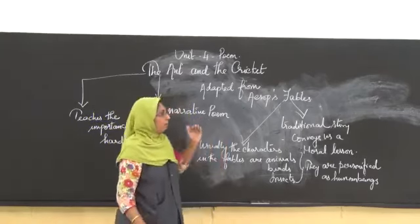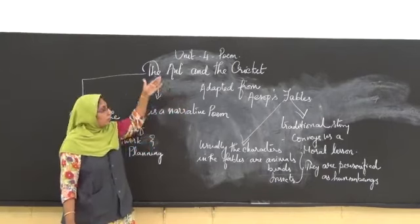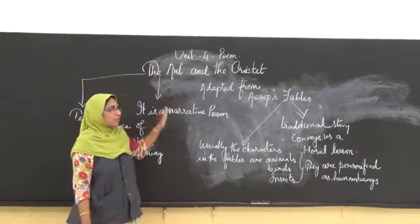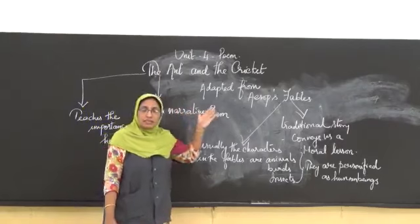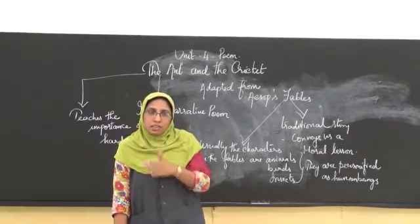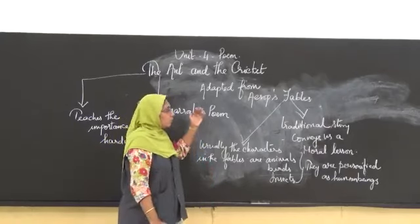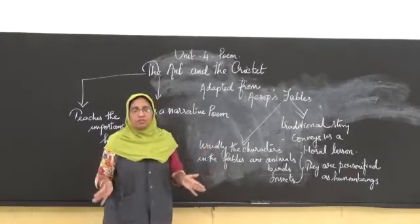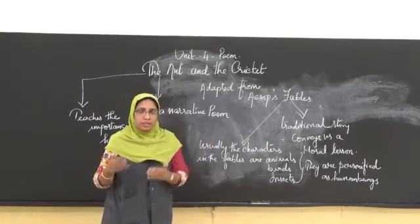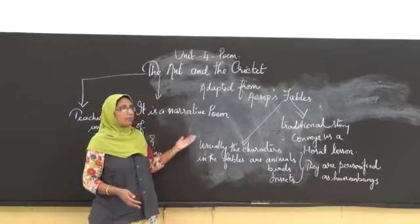Now I will give a gist of the whole poem. The first stanza explains that the cricket, the whole summer, he was dancing and singing. And he did not save anything for the future. So when he came to know that he did not save anything for the future, during the winter, he went to ant.